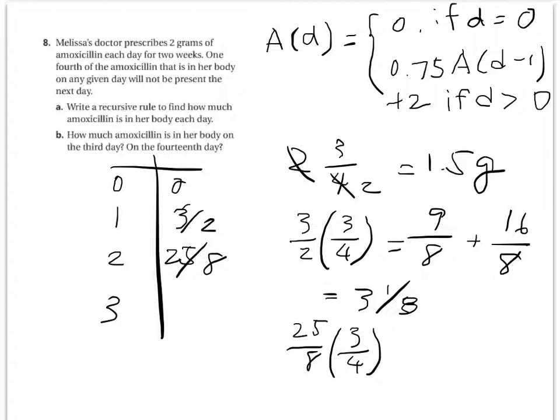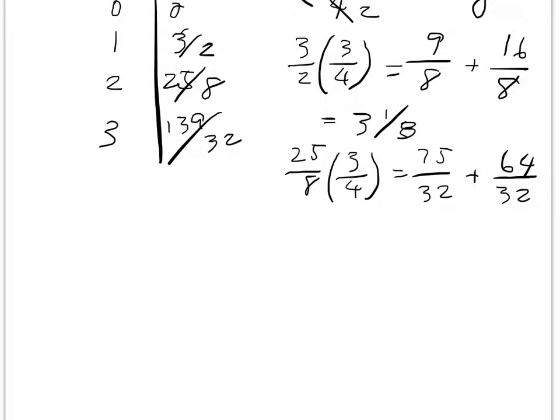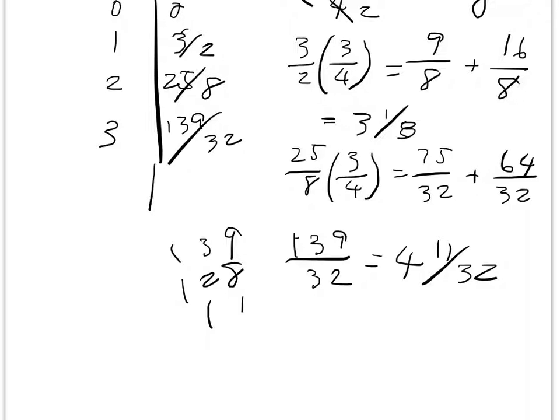So long story short, we can do that. That's actually 75 over 32. And then you take 2 grams of it. 2 grams, we can convert it to 64 over 32. So you add it together. 139 over 32. So how many 32 can fit in 139? 4 of them. So 139 over 32 is 4 and 11 over 32 grams. So that's the answer of it.